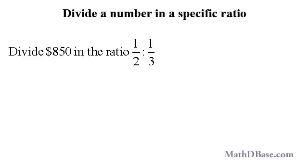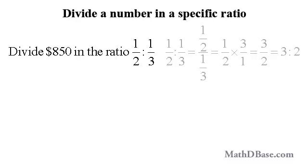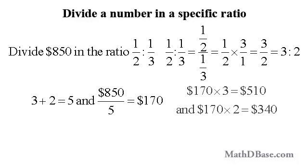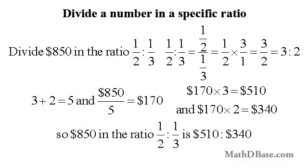Divide $850 in the ratio one-half to one-third. Since one-half to one-third equals 1/2 over 1/3, which equals 3 over 2, dividing $850 in the ratio 1/2 to 1/3 is the same as dividing it in the ratio 3 to 2. The sum of the terms is 3 + 2 = 5, and $850 ÷ 5 = $170. So $170 × 3 = $510 and $170 × 2 = $340. Therefore $850 in the ratio one-half to one-third is $510 to $340.